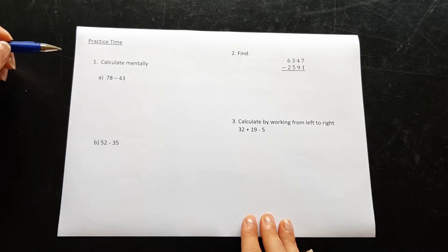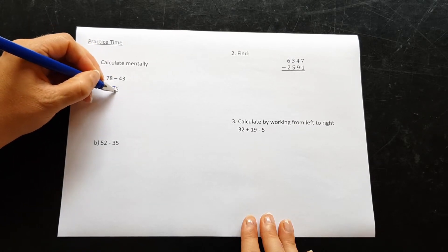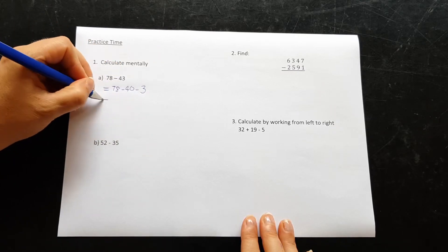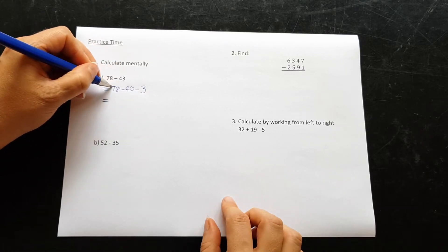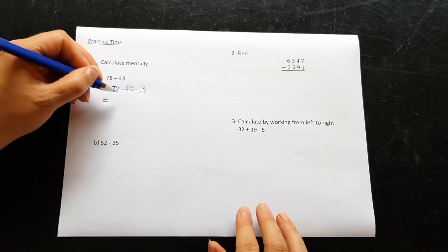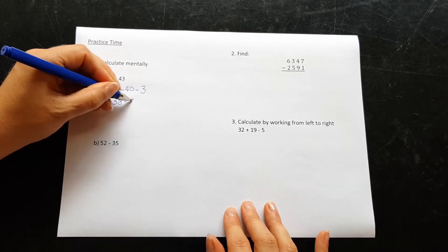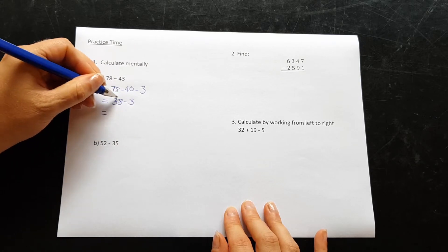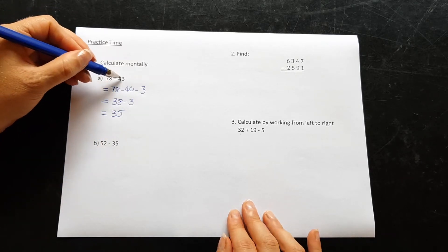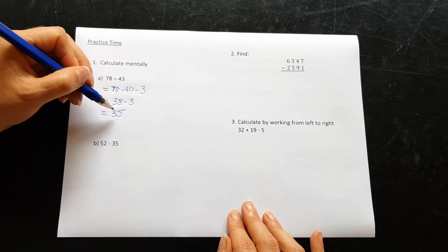For question 1, calculate mentally. 78 take away 43. We can start with 78. We can take away the 40 and then take away the 3. Taking away the 40, counting backwards from the 70 gives us 38. And then we can take the 3 off the ones, which will make 35. Some of you might find you can do that straight from the beginning. 7 minus 4 is 3, 8 minus 3 is 5.